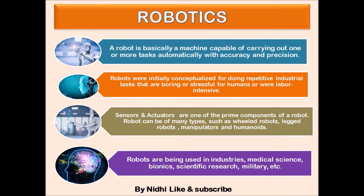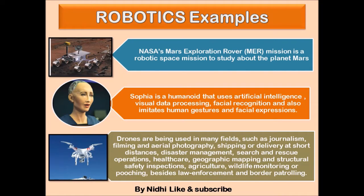Robots can be fully autonomous or semi-autonomous. Initially, robots were conceptualized for doing repetitive industrial tasks that are boring, stressful, or labor-intensive for humans. Robots can be of many types such as wheeled robots, manipulators, and humanoids. A robot that resembles humans is called a humanoid — for example, Sophia. Robots are used in many fields such as industry, medical science, bionics, scientific research, and military operations.